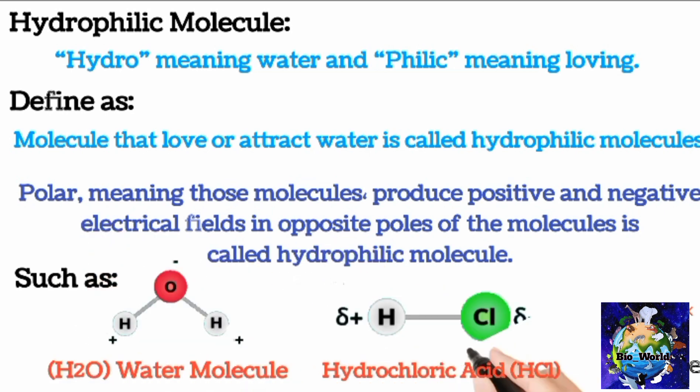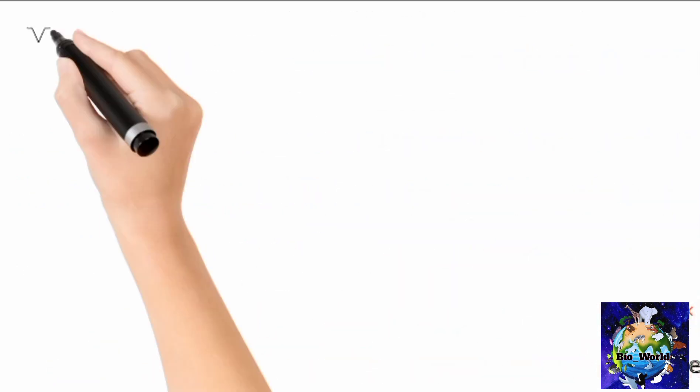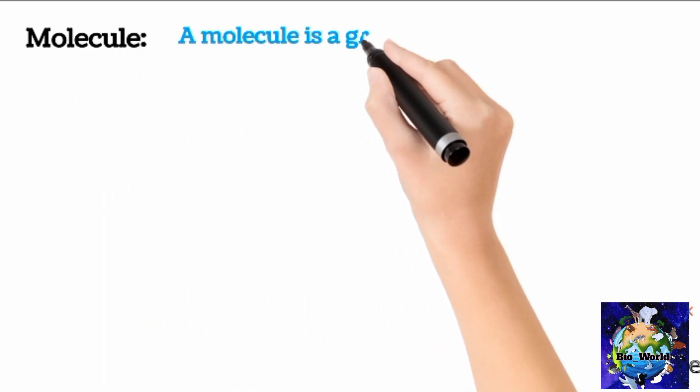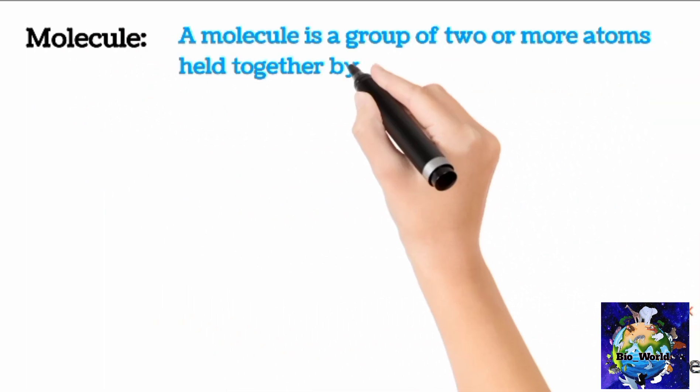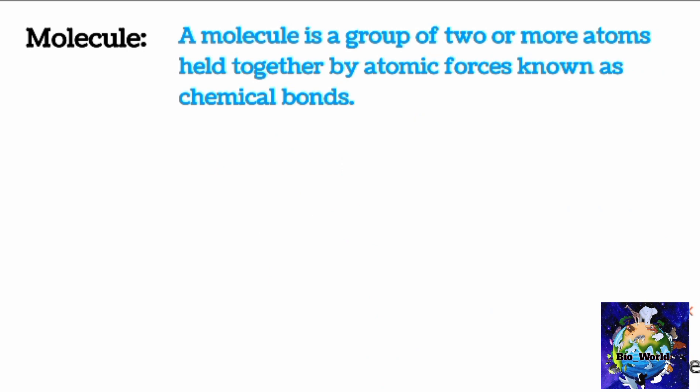You can see positive and negative electrical fields in opposite poles of these two molecules. A molecule is a group of two or more atoms held together by atomic forces known as chemical bonds. For example, such as H2O, CO2, CH4, etc.